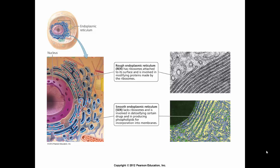The rough endoplasmic reticulum is studded with ribosomes — thus it's called rough. These ribosomes are attached to the surface and are responsible for making proteins. The rough endoplasmic reticulum is involved with modifying the proteins before shipping them forward to the Golgi apparatus, which is responsible for shipping them either inside the cell to where they belong or outside the cell. The smooth endoplasmic reticulum, on the other hand, does not have ribosomes. They're involved in detoxification and producing phospholipids important for incorporating into the phospholipid bilayer of the plasma membrane.